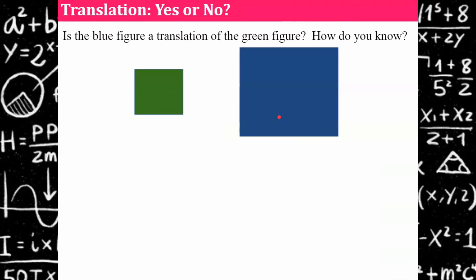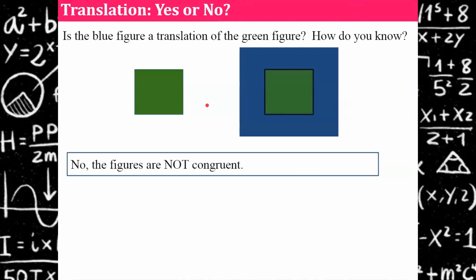Translation — yes or no. Has this blue figure been a translation of the green figure and how do you know? The answer is no — we can already say no, it's not a translation because they're not congruent.